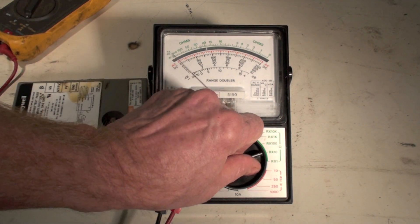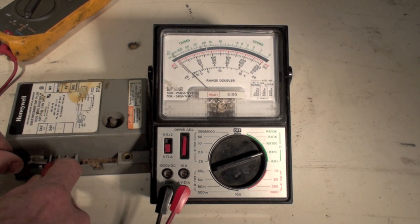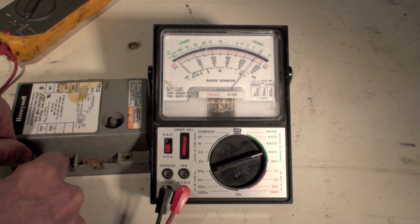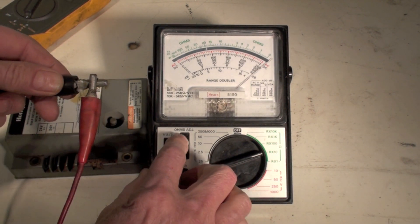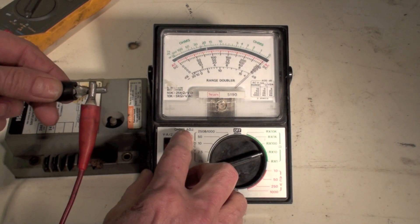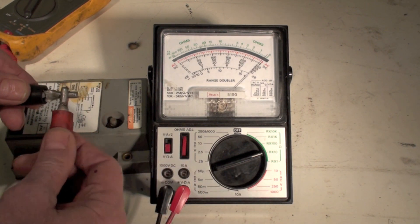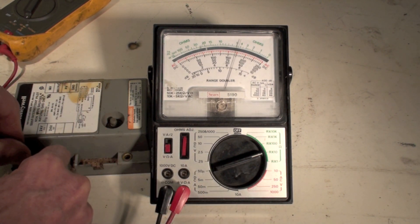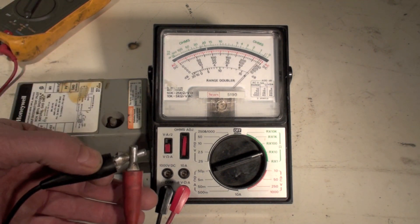Now, I could change this to r times 10. Let's see if we can zero this out. It's out of zero again. So it's got to be changed each time you do this. Not too far off, about 15. So this works.